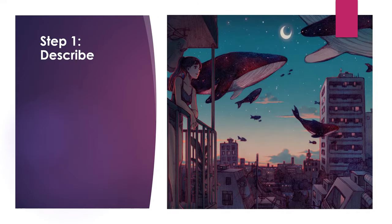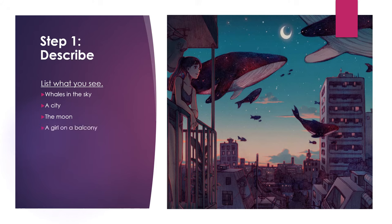Let's jump into our art critique now. For step one, I'm going to describe or list what I can see. For starters, I see several whales flying above a city. The moon is out, so it must be close to nighttime. There's also a girl on a balcony watching the whales.